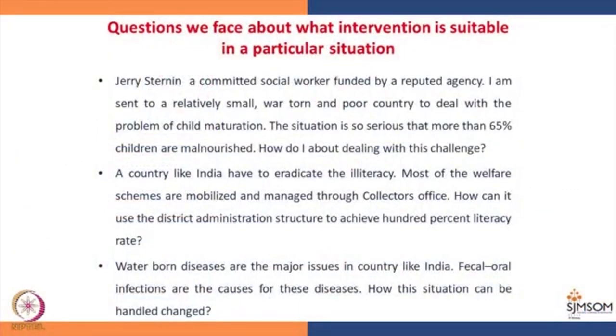A country like India has to eradicate illiteracy. Most of the welfare schemes are mobilized and managed through the collector's office, and how can it use the district administration structure to achieve 100 percent literacy rates? The collector's office is a nodal agency which routes maybe dozens of welfare schemes and developmental schemes. If we have to make a collector's office work towards achieving 100 percent literacy with more vigor, what can be the way?